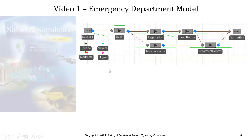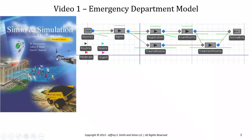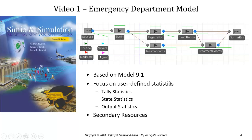This is an example from the Simio and Simulation textbook — model 9.1 is what our model is based on. Our focus in this module is on user-defined statistics, so for this model we'll look at tally statistics, state statistics, output statistics, and also an application of secondary resources.